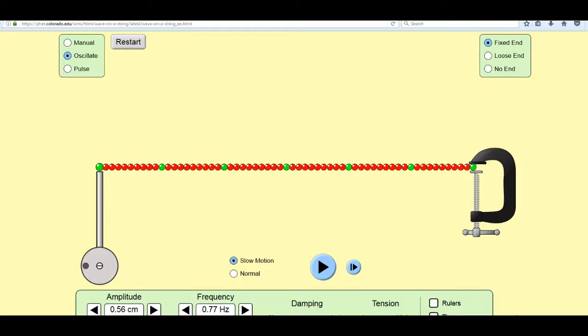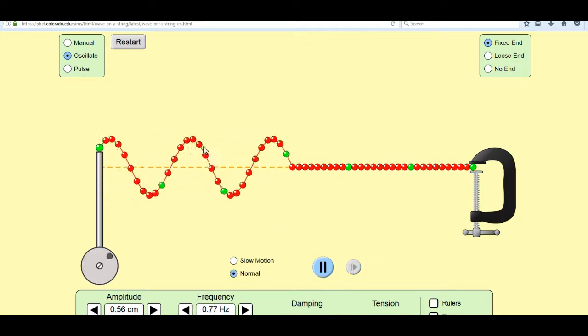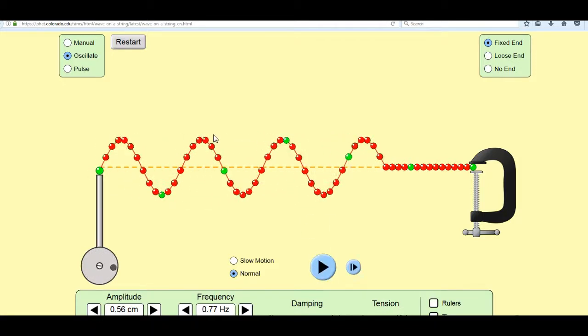But how do standing waves really form? I mean, if I start this thing oscillating, the wave travels across. There's motion of these crests. They move to the right. It's not standing. It's not stationary. Well, let's watch a little longer.